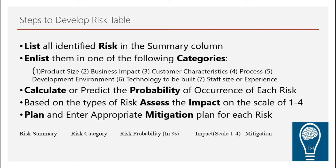The remaining categories include: process risk, which involves the development processes followed in the company; development environment, covering things like remote work and communication channels; technology to be built, including all technological upgrades and updates that affect the system; and staff size and experience — or inexperience — which also plays a part. You list summarized risks into these categories.